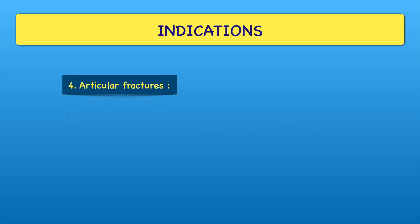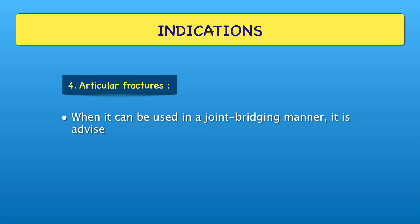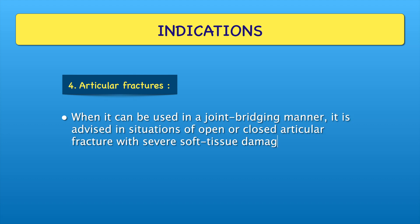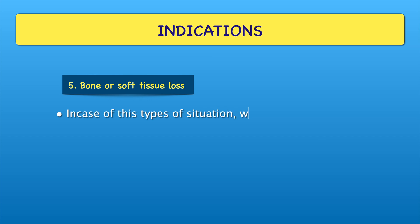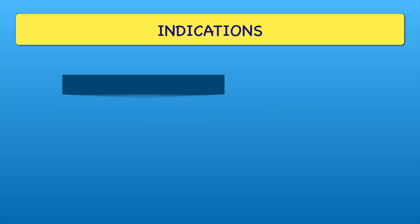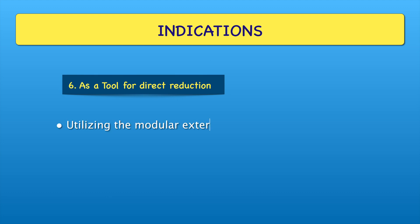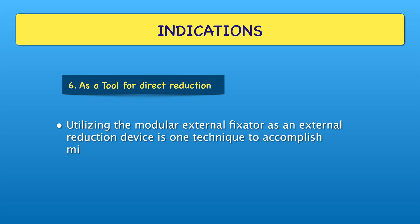Articular fracture: when it can be used in a joint bridging manner, it is advised in situations of open or closed articular fracture with severe soft tissue damage. In cases of bone or soft tissue loss, we can use the fixator to provide support. As a tool for direct reduction, utilizing the modular external fixator as an external reduction device is one technique to accomplish minimally invasive intraoperative reduction.